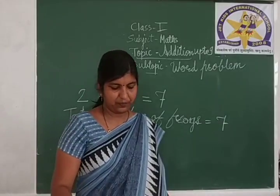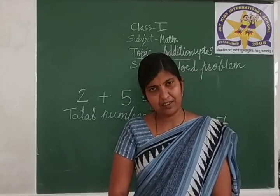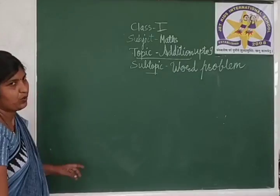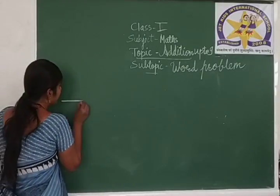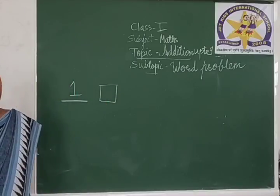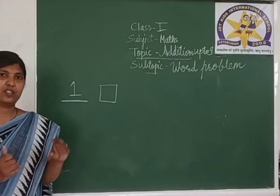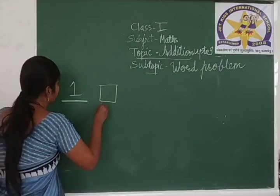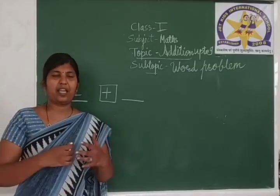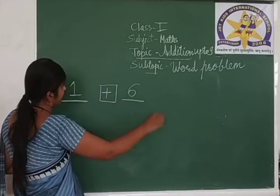Let us see another example: one bird is flying, six more come along. How many birds are there now? First, how many birds were flying? There is only one bird. We got the number 1. Because six more came along, you have to put a plus symbol for addition. We put things together or join them, so we use addition. Give the plus sign. Six more came along, so we got another number: 6.